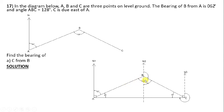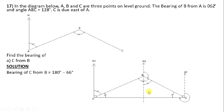We are looking for the bearing of C from B. Since angles on a straight line add up to 180 degrees, we subtract 66 from 180 degrees. The bearing of C from B equals 180 − 66 = 114 degrees.